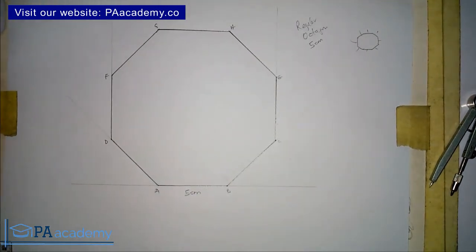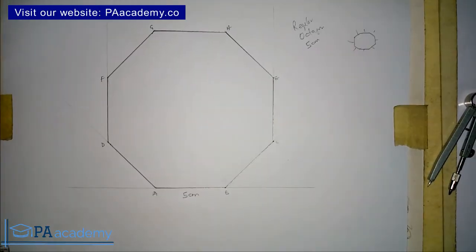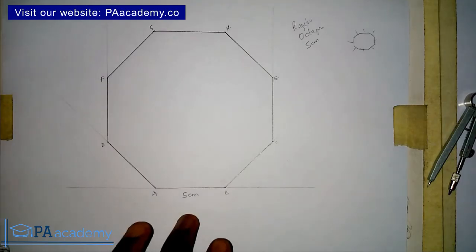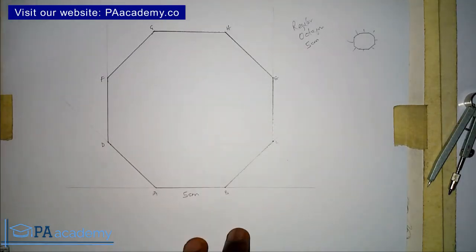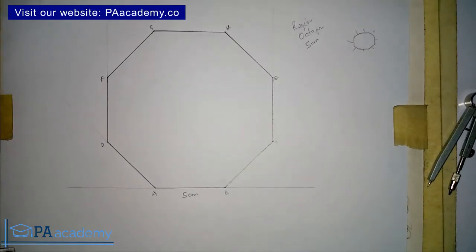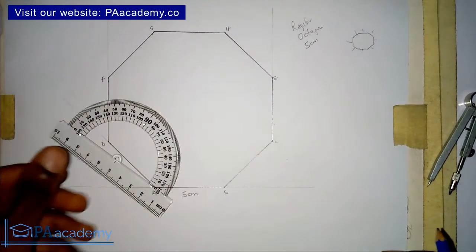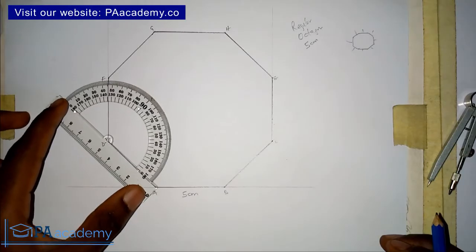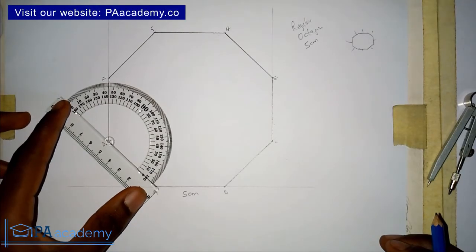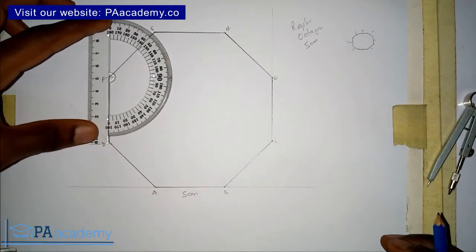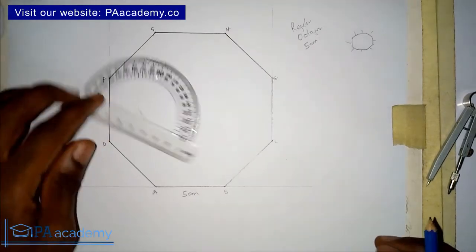Irrespective of the length of the side you are given, just follow the same steps. Even if you are working with more than 5 cm or less than 5 cm, just follow the steps. Use the angle of 45 degrees, place your protractor the same way I placed it, and look for your 45 degrees — and you will be fine.